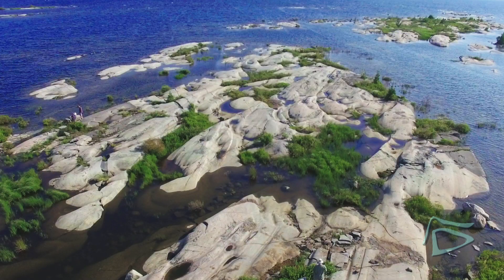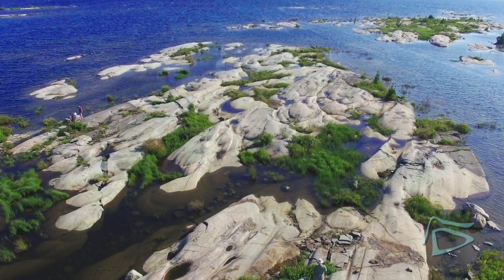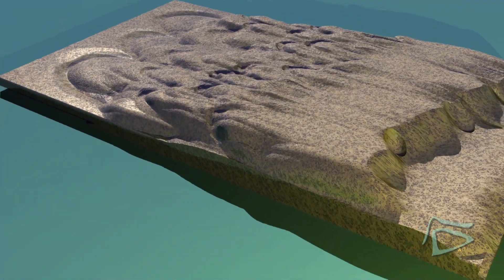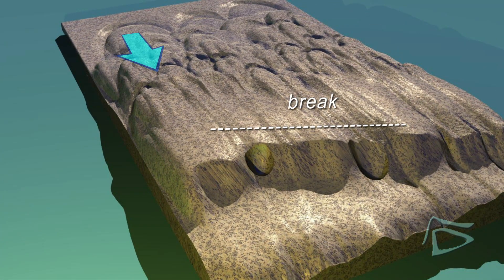Main forms show directional integrity with no cross-cutting fields. Differential erosion processes occur on the downflow lee side. At the break, some longitudinal vortices convert to vertical vortices and erode potholes.